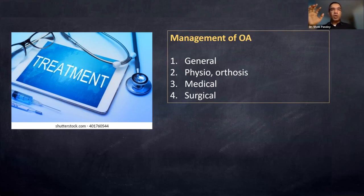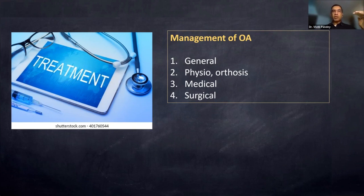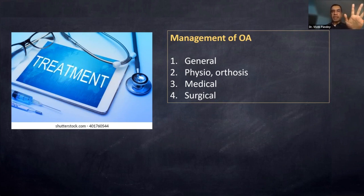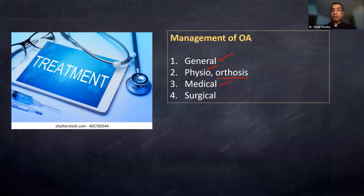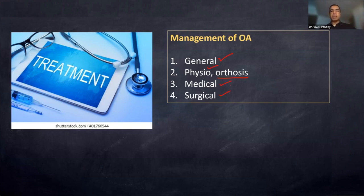Now for management. In orthopedics, you can classify your answer into five areas: general measures, physiotherapy, orthosis (belts, braces, crutches, walkers), medical management, and surgical management. If you classify a long answer or short note this way, it becomes very easy. Otherwise your answer is haphazard — jumping from surgical to medical to physiotherapy with no system.